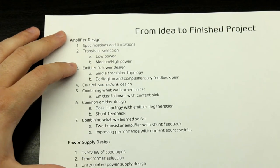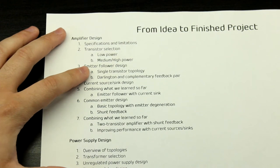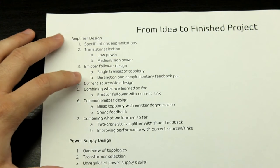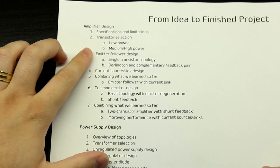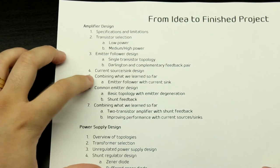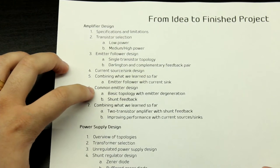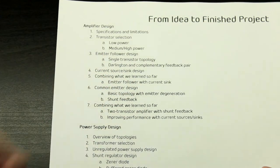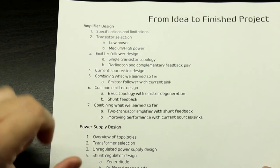Then we are going to look at actual circuits. The first one is the emitter follower, commonly used as a buffer — we'll look at the single transistor topology, then increase its current handling by looking at Darlington and complementary feedback pair. We'll look at current sources and sinks and how to design them, then combine what we've learned into an emitter follower with a current sink — which will eventually be the output stage of our headphone amplifier. Then we'll look at amplification: a common emitter with emitter degeneration for some feedback and linearity.